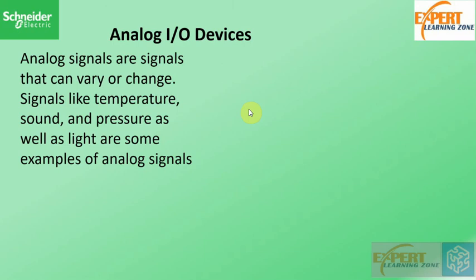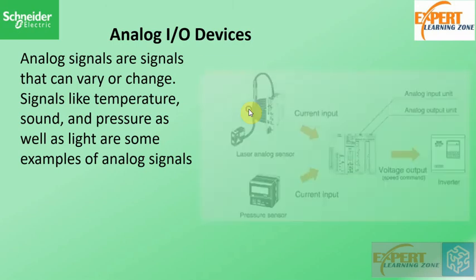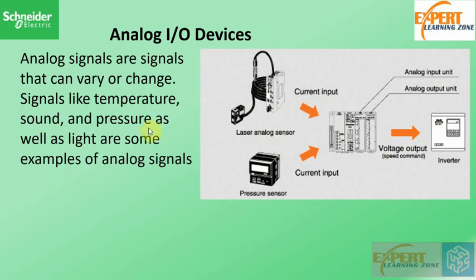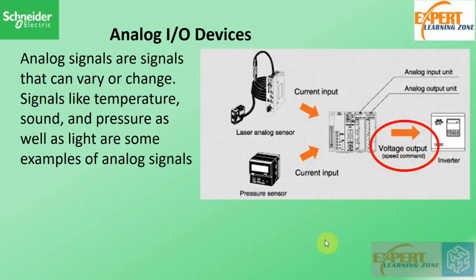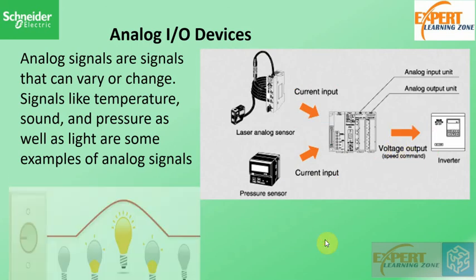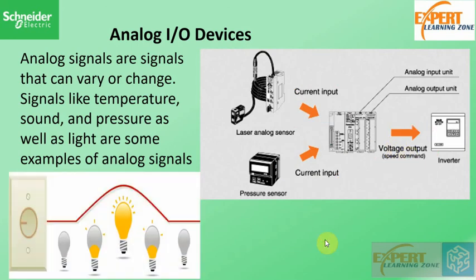Analog signals are signals that can vary or change. Signals like temperature, sound, pressure, and light are some examples of analog signals. It is important to note that analog signals can be in the form of a current or in the form of a voltage.